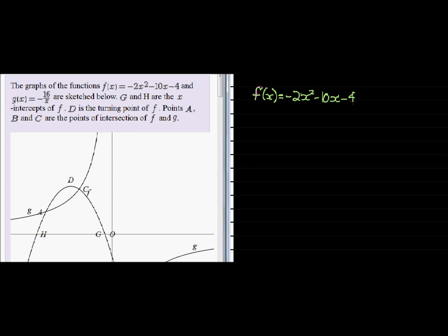We know that the center or the symmetry line is given by negative B over 2A. That means B is negative 10, so that would be a positive 10 over 2. And A is equal to negative 2. So negative 2.